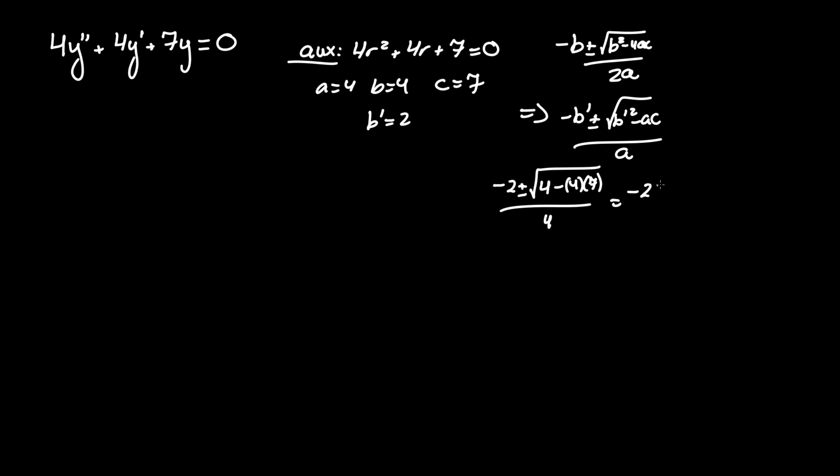Evaluating further, we have minus 2 plus minus square root of 4 minus 28 is negative 24. Keep that all over 4, and then negative 2 plus minus square root of negative 4 times 6, which equals negative 24 over 4.